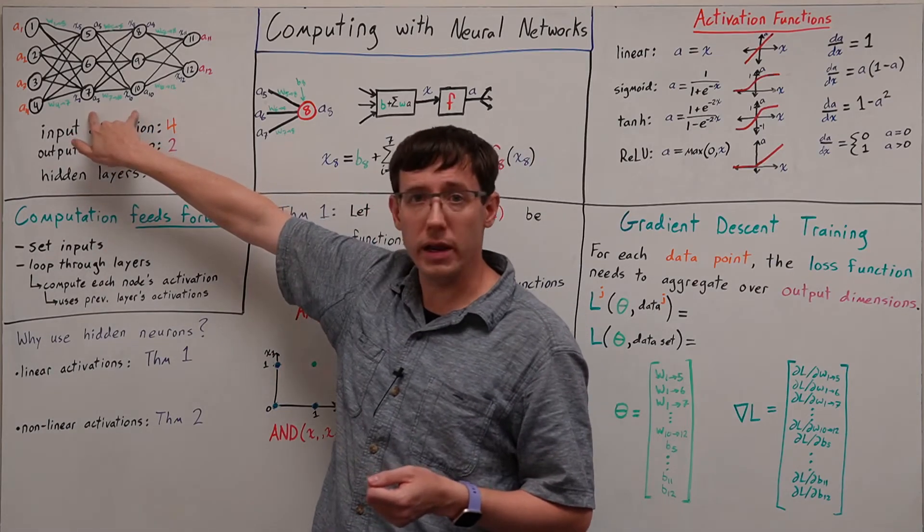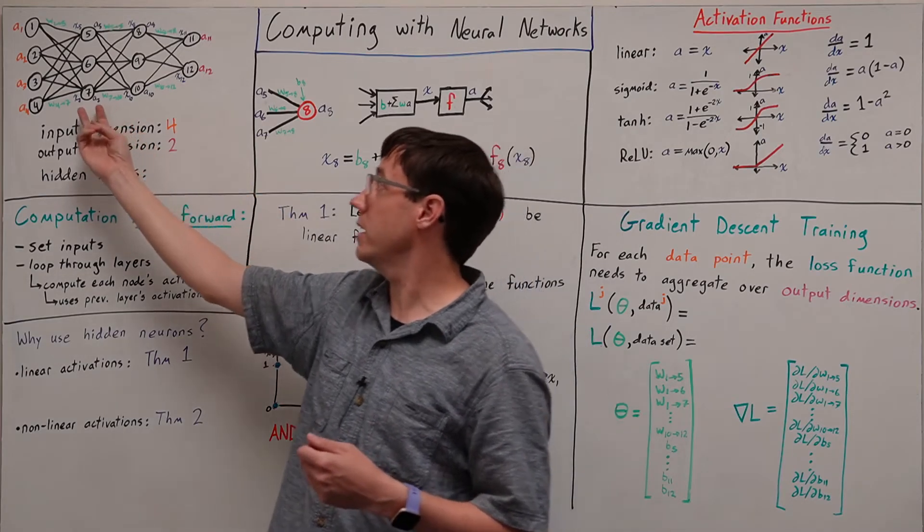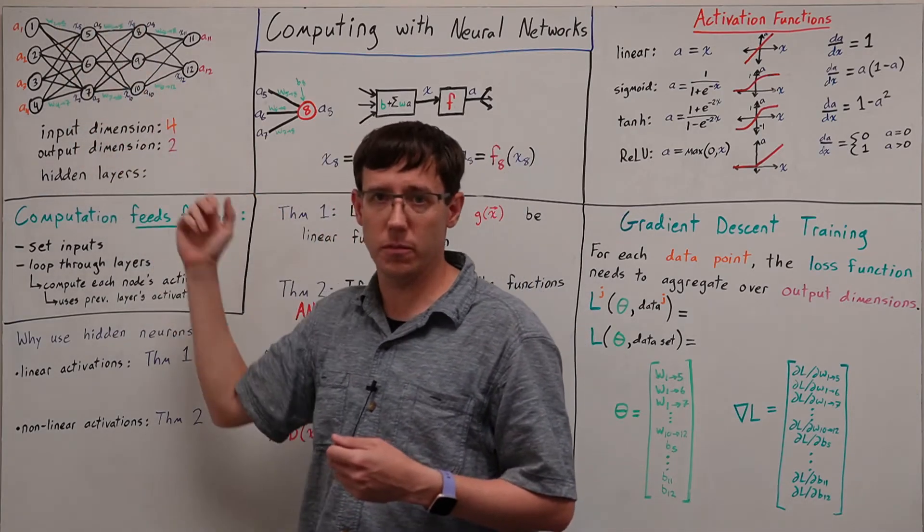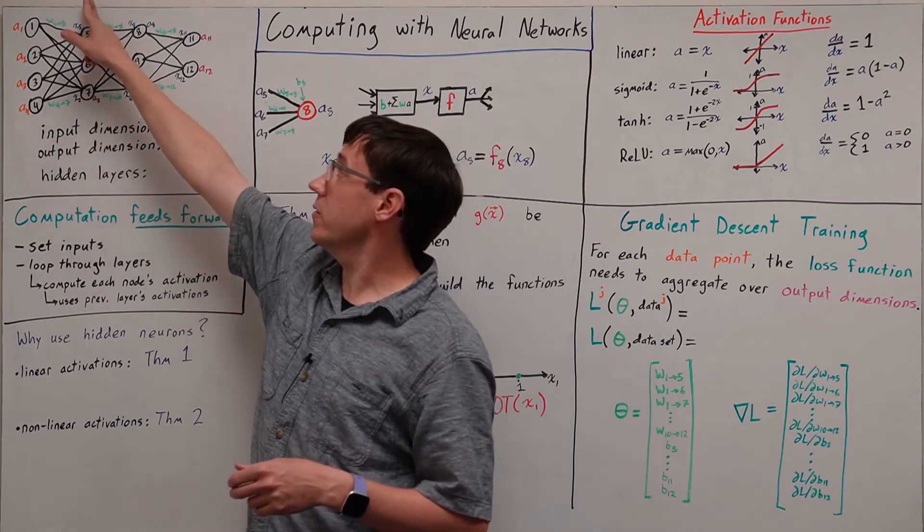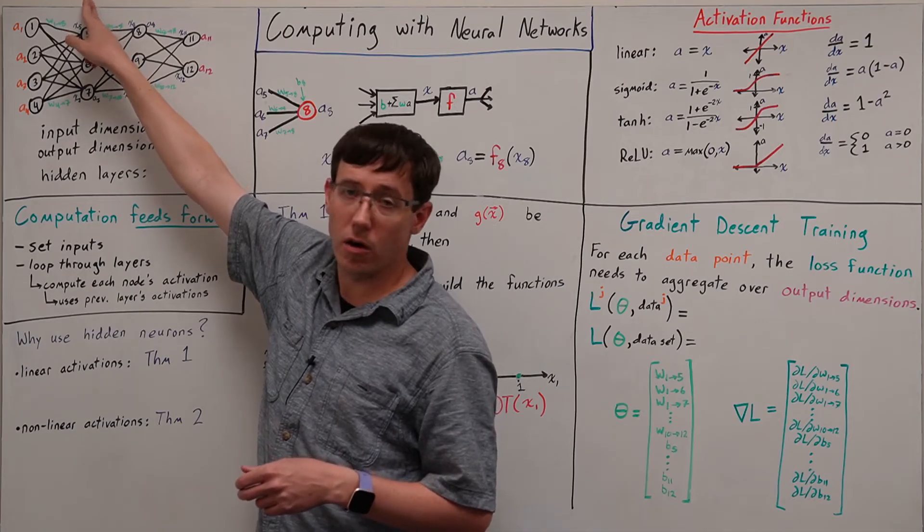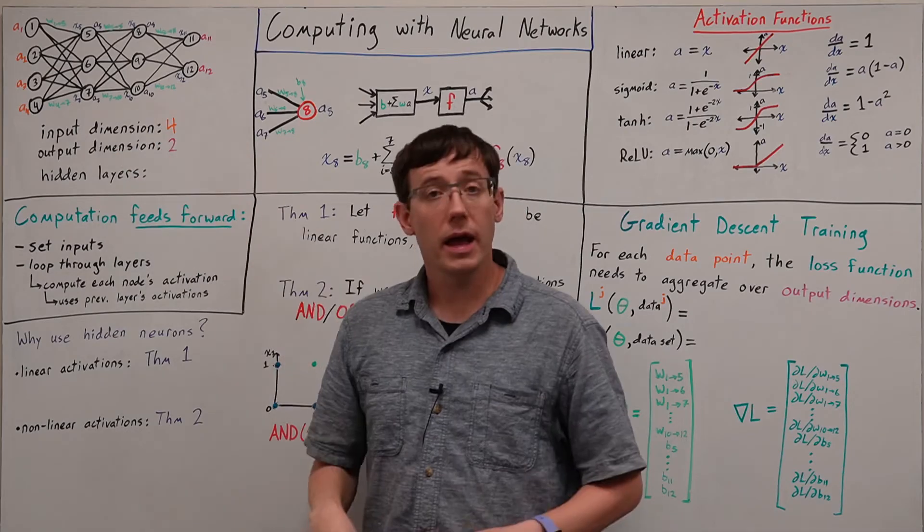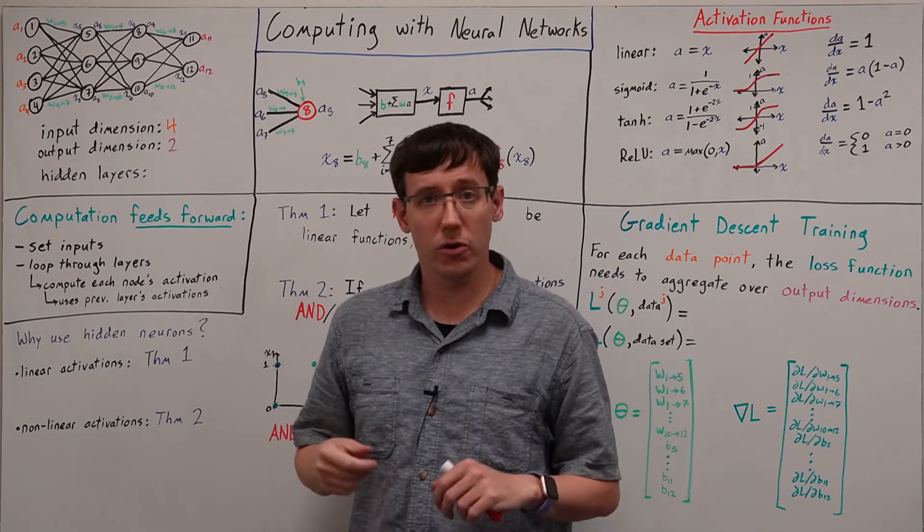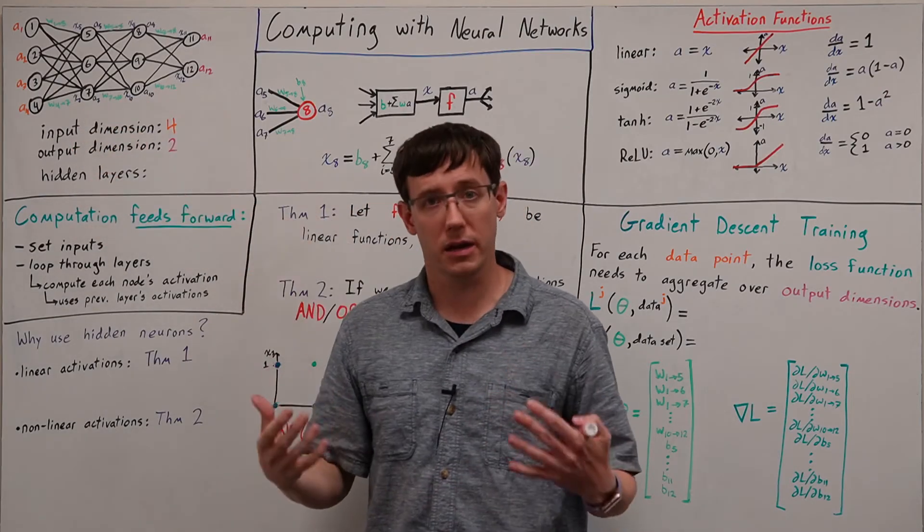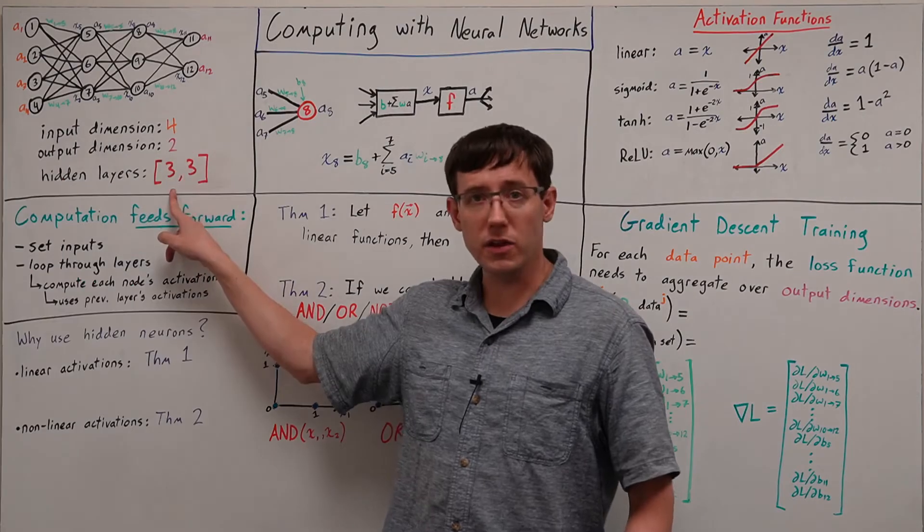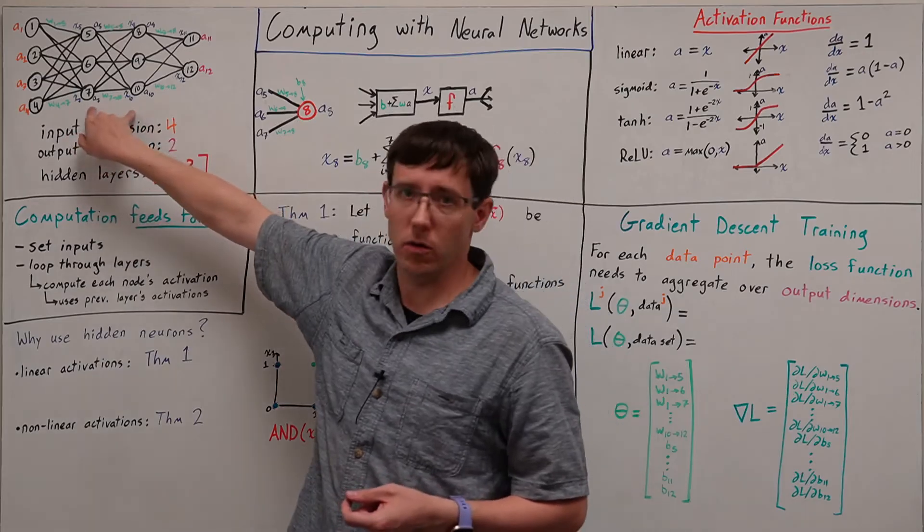These neurons in between are known as hidden neurons, and they are typically organized into layers. The layer structure means that if we compute all of the activations for one layer, then we know that all of the inputs for the next layer are now available. And so we'll often describe our neural networks in terms of the number and size of hidden layers. In this case, we have two hidden layers that each contain three neurons.